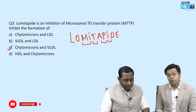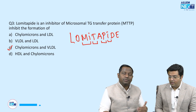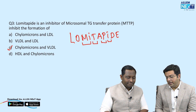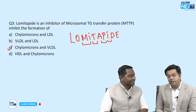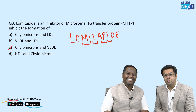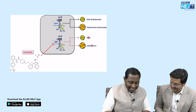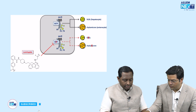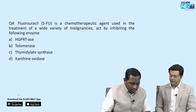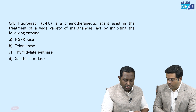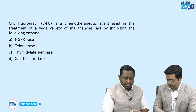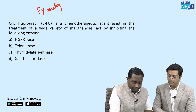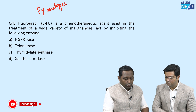Simple mnemonics are easier to remember because they correlate with the name directly. Now the next question is about 5-fluorouracil, a chemotherapeutic agent used for treatment of a wide variety of malignancies. It is a pyrimidine analog and acts by inhibiting which of the following enzymes?